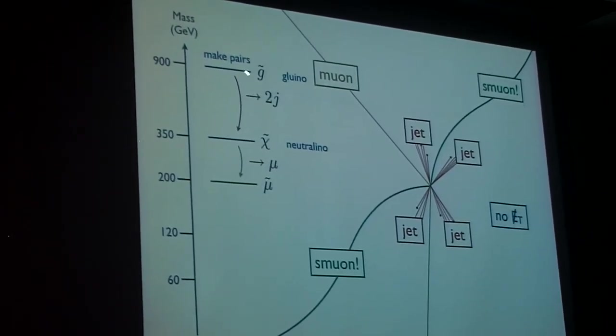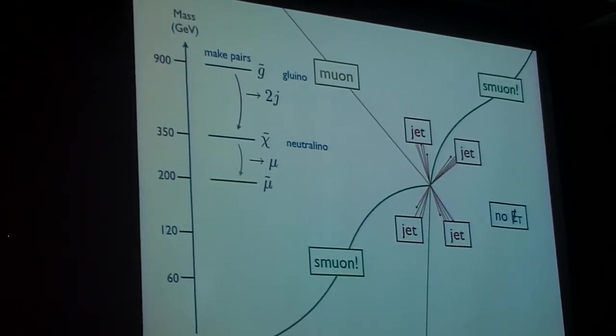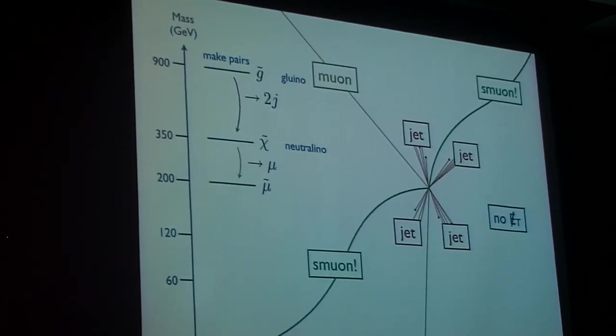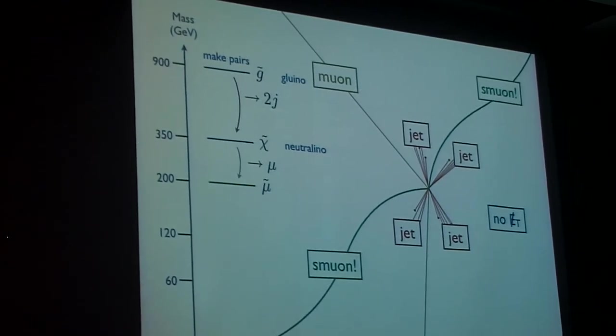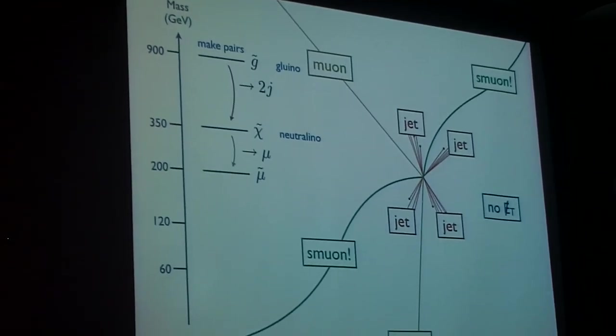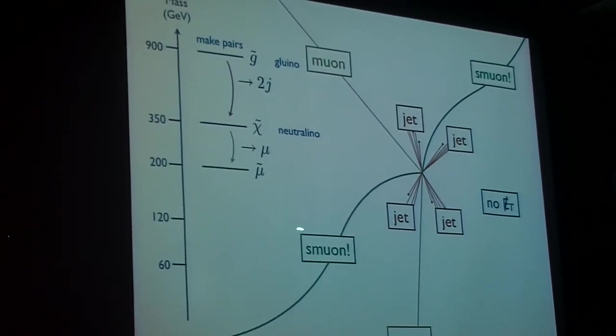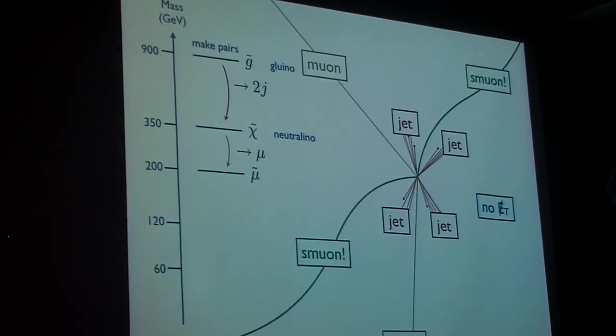...cascade decaying down, giving two jets to a neutralino, which then cascades down, yielding off a muon to end in the smuon. So your final state is really two muons, two smuons, four jets, and no missing energy.